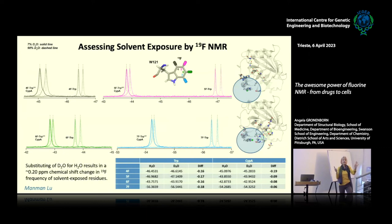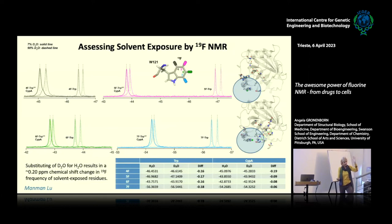You can immediately determine whether a fluorine position is solvent-accessible or buried, without any prior structural knowledge. You record your spectrum in 5% D₂O and then in 100% D₂O: a solvent-exposed fluorine shows a characteristic isotope shift of roughly 0.2 ppm, while buried ones do not shift. In our tryptophan example, the 4-position is facing the water while the other three positions are buried inside the protein — a very simple experiment you can do with any protein.